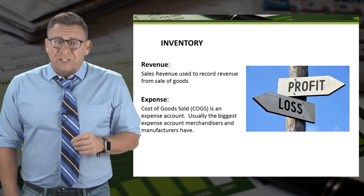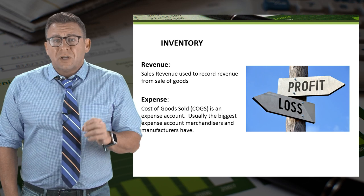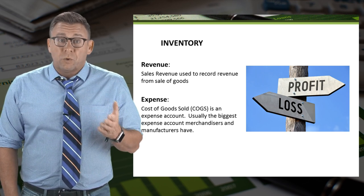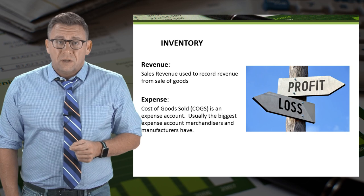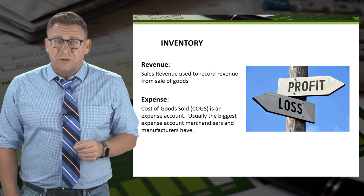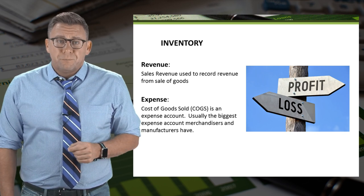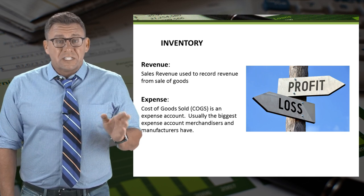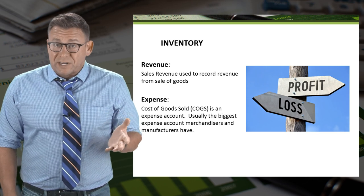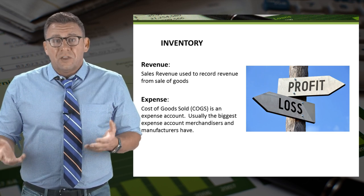When we follow the matching principle, we are matching revenues with related expenses in the period in which they were earned or incurred. Our revenue is sales revenue — this type of revenue we earn from selling goods. Our expense is cost of goods sold, which represents the cost to us to sell the goods.